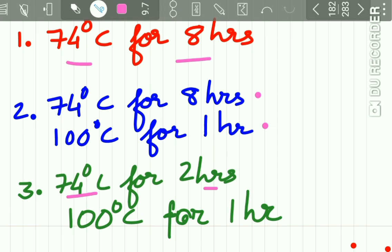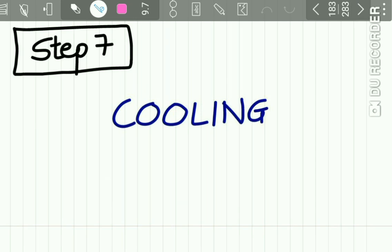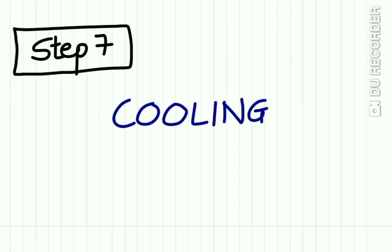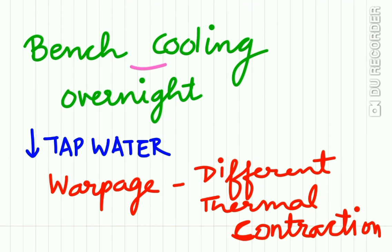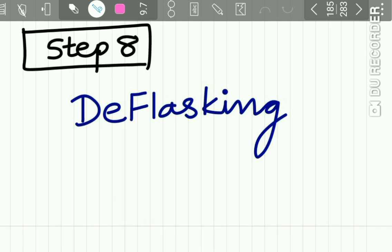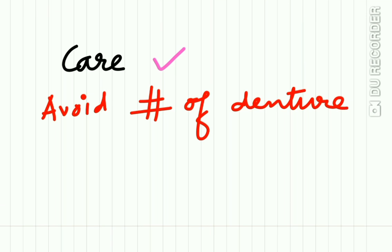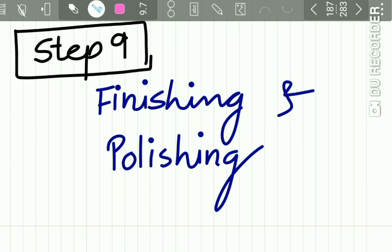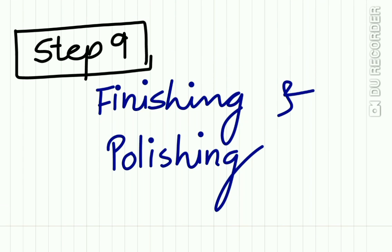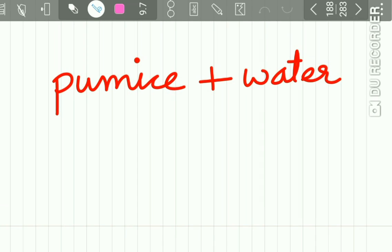Step 7 is cooling — bench cooling is recommended; overnight cooling of the flask is advised. If cooling is done faster under tap water, warpage of the denture occurs due to differential thermal contraction between the resin and the gypsum mold. Step 8 is deflasking, done carefully to avoid fracture of the denture. Step 9, the final step, is finishing and polishing of the denture using pumice and water.